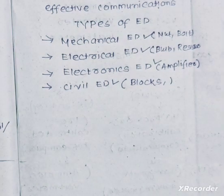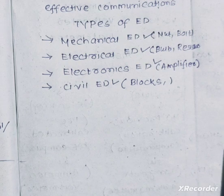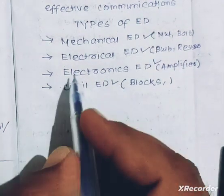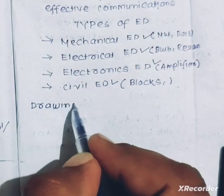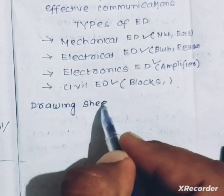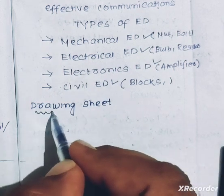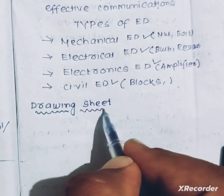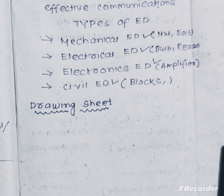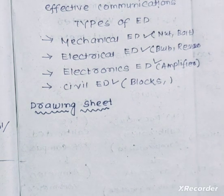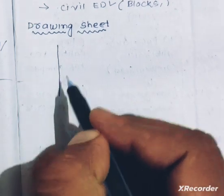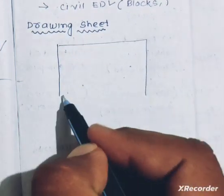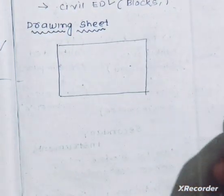Then we have a very important heading — Drawing Sheet. As you can see, this is the question. As you can see, this is the drawing sheet. With the help of a diagram, we are going to see the drawing sheet. This is the drawing sheet.